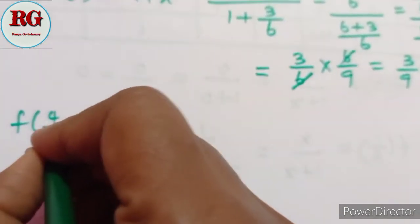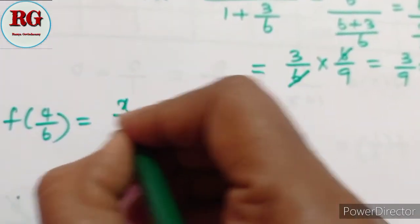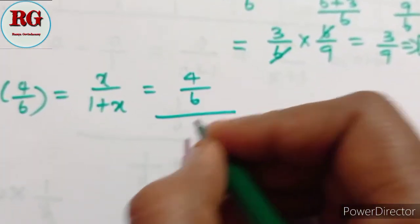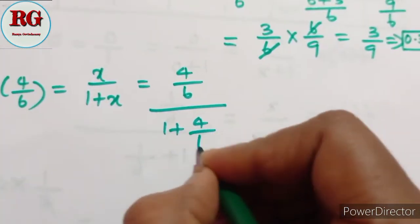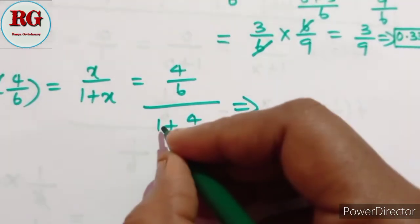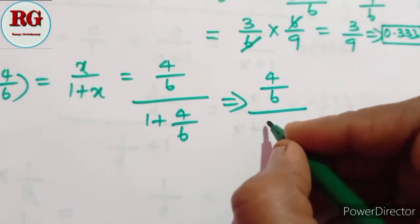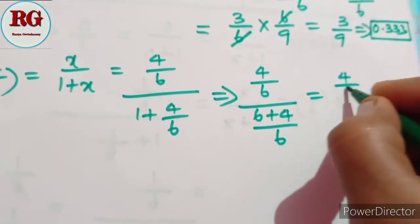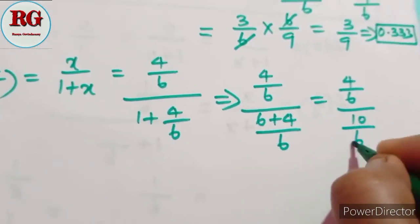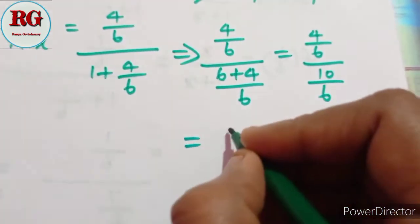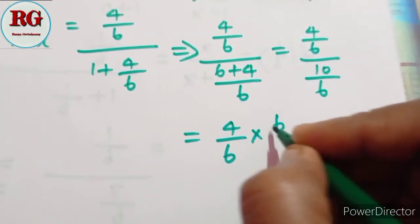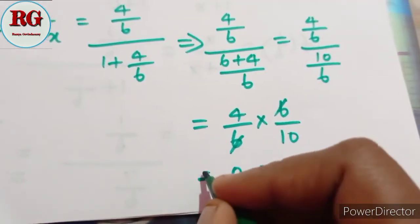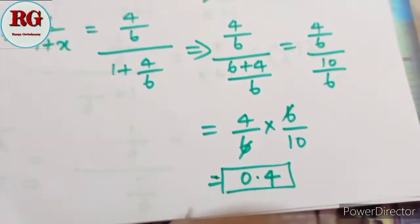Next, f(4/6): using the same formula, (4/6) divided by (1 plus 4/6). Taking LCM gives (4/6) divided by (10/6). Flipping: (4/6) multiplied by (6/10) equals 4/10, which equals 0.4.